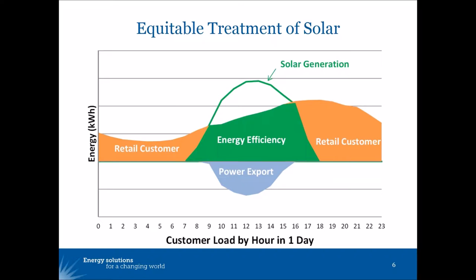And in blue, the power exports to the grid. If the value of power is highest in the middle of the day, the solar customer on a time of use rate would get fair compensation for the valuable power they produce. If, on the other hand, as is becoming the case in Hawaii, power is most valuable after the sun goes down, a time of use rate would charge the solar customer appropriately for the high cost power they use and credit them appropriately for the lower value power they export.